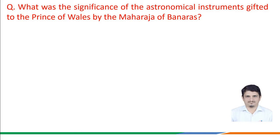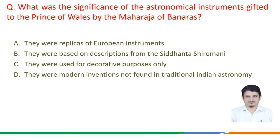The next question is: what was the significance of the astronomical instruments gifted to the Prince of Wales by the Maharaja of Banaras? Option a) they were replicas of European instruments, option b) they were based on the descriptions from the Siddhanta Shiromani, option c) they were used for decorative purposes only, option d) they were modern inventions not found in traditional Indian astronomy.